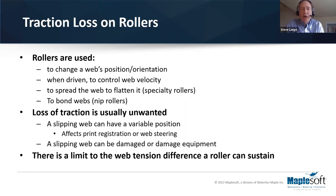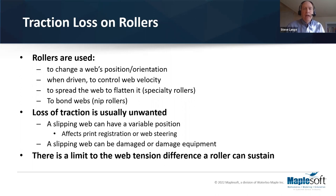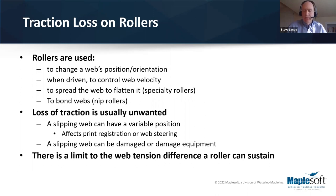If you have slippage, you can have things like damage to the web — film scratching is a problem — or you can wear coatings off surfaces and rollers, meaning a slipping web can also damage equipment. In the case of non-woven or fibrous materials like paper, slipping webs will generate a lot of dust and fiber buildup, which can cause machine stops later.